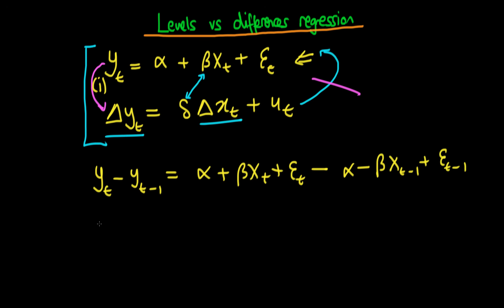Summarizing this a bit easier, if I get rid of the alphas because those two things are cancelling, I've got that the change in yt is equal to beta times the change in xt plus some change in error. And the idea here is that this process looks very much like this one which I've stated here.